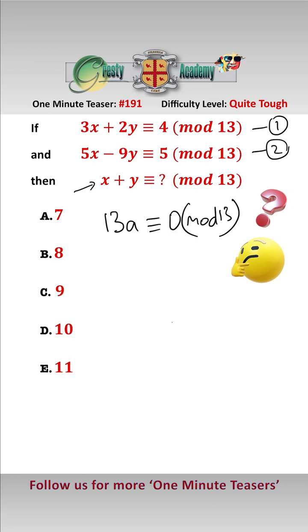Let's look at equation 2 and add 13y, which is 0 mod 13, and that still equals 5 mod 13. So therefore 5x add 4y is equal to 5 mod 13.